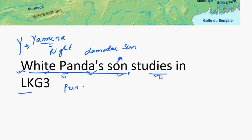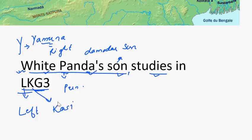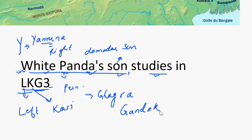'Studies in LKG3' — L stands for 'left,' meaning all of KG3 are left bank tributaries. K is for Kosi, G is for Ghagra, another G is for Gandak, and 3 is for Gomti. So LKG3 covers all four left bank tributaries.